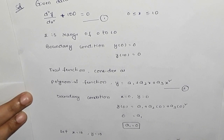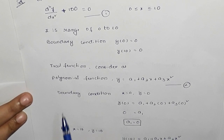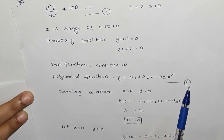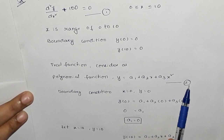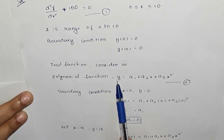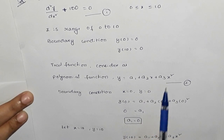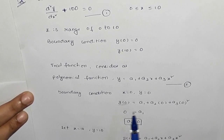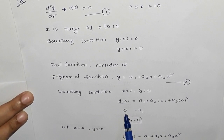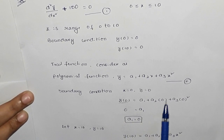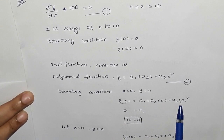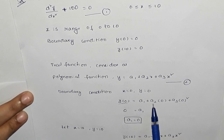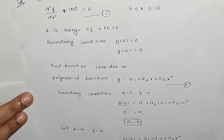Applying the first boundary condition: y(0) = 0. Substituting x = 0 into the polynomial y = a1 + a2·x + a3·x², we get y(0) = a1 = 0. Therefore, a1 = 0.